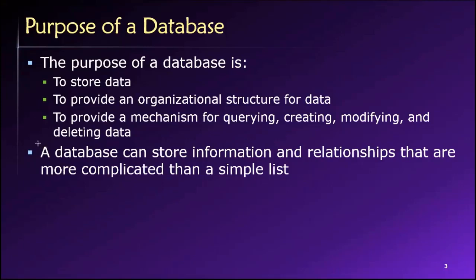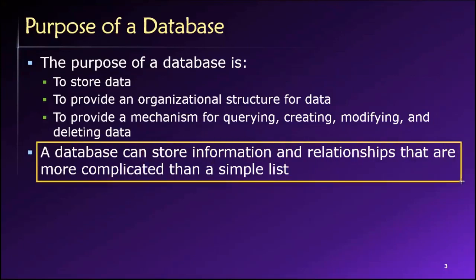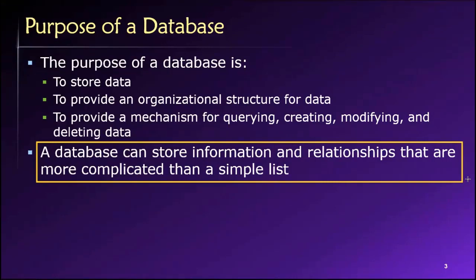Beyond these motivating purposes of a database, another great thing about databases is that they can store information in a way that maps directly to what we see in the real world. This extends beyond what we can do with a simple list. In the real world and in the business world, the information and data that we have are very commonly related to each other in some kind of hierarchical way — and this hierarchy occurs very commonly in the natural world and certainly in the business world as well.